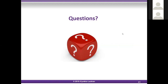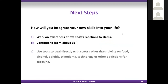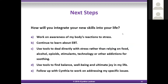Let me finish the last few slides. Next steps: how will you integrate your new skills into your life? This was just an overview — like ordering an hors d'oeuvre at a restaurant, you can't say you had dinner. So for next steps: do you want to work on awareness of your body's reaction to stress? Continue learning more about emotional brain training. Use tools to deal directly with stress rather than relying on food, alcohol, opioids, stimulants, technology, or other addictions for soothing. Use tools to find balance, well-being, and ultimate joy. And you can always follow up with me to address specific issues.